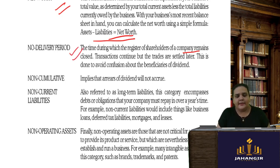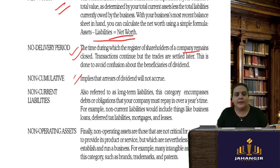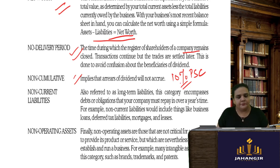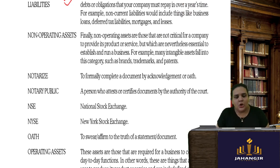Non-cumulative means arrears of dividend will not accrue. Preference shareholders are paid a fixed dividend rate yearly — say 10 percent preference share capital. Cumulative means if dividend is not paid this year, next year you pay 10 percent for last year plus 10 percent for this year. Non-cumulative means the previous year's dividend is foregone and only this year's dividend is paid.